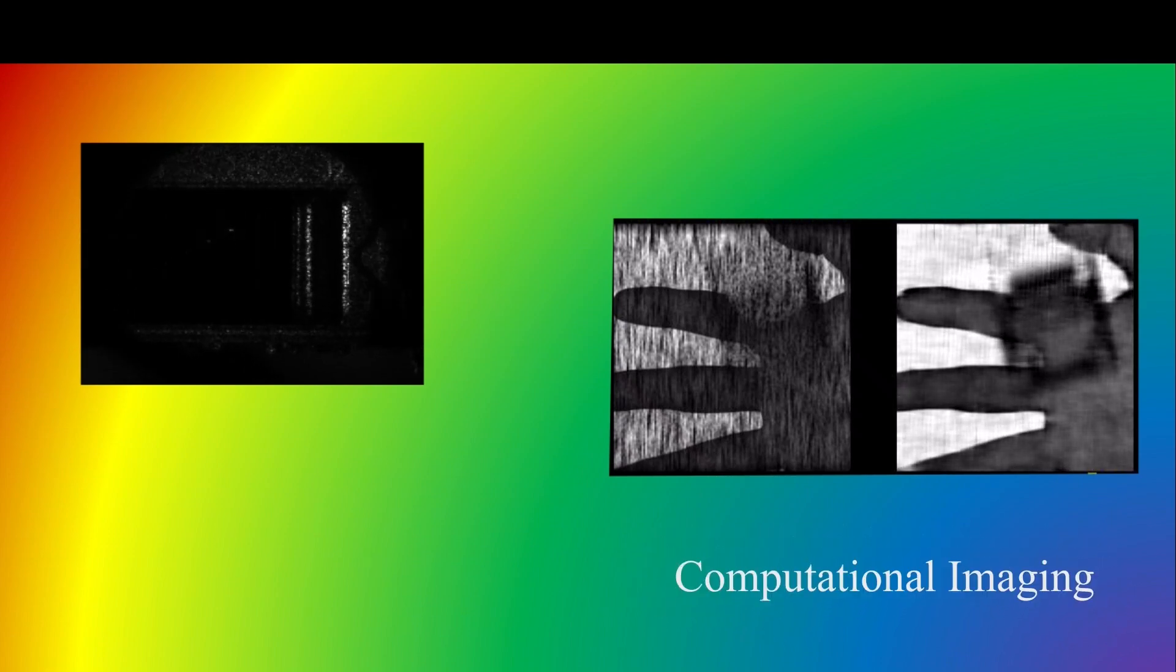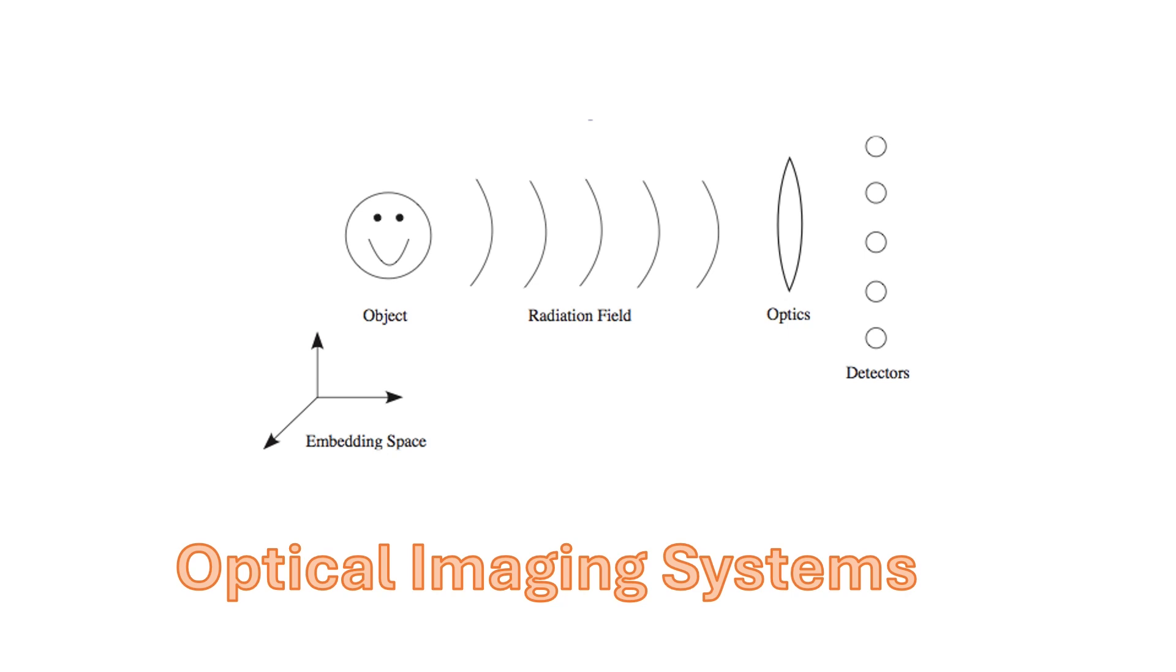Let's start talking about optical system design. We want to measure an object shown over here on the left. We have detectors that are going to make measurements of the radiation field coming from the object. In most cases, we're going to have to use optics between the object and the measurements to condition our measurements and create our forward model.